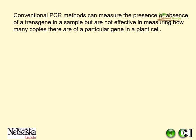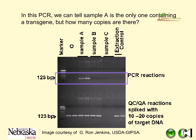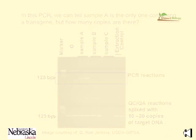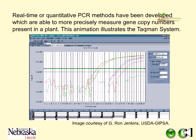Conventional PCR methods can measure the presence or absence of a transgene in a sample, but are not effective in measuring how many copies there are of a particular gene inside the plant cell. In this PCR, we can tell that sample A is the only one containing a transgene, but how many copies there are we cannot know. Real-time or quantitative PCR methods have been developed which are able to more precisely measure gene copy numbers present in a plant.